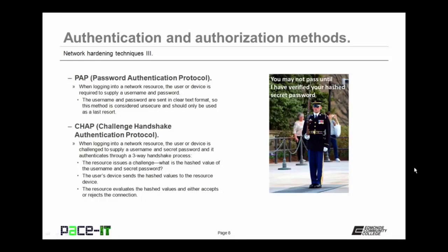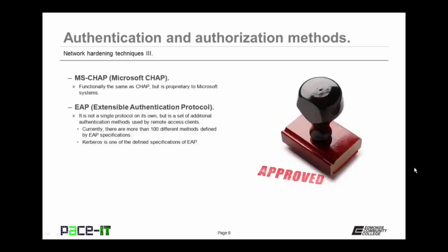The way CHAP works: the resource issues a challenge, wanting to know the hashed value of the username and secret password. The user's device sends the hashed value to the resource device, and the resource evaluates the hashed value and either accepts or rejects the connection. By using CHAP, the username and password are never sent in clear text — it's much more secure than PAP. There's also MSCHAP — functionally the same as Challenge Handshake Authentication Protocol, but it is Microsoft's proprietary implementation of it.